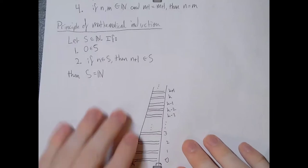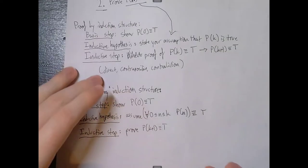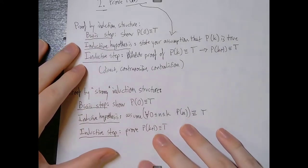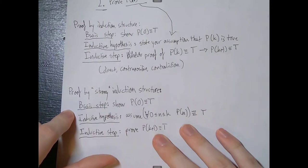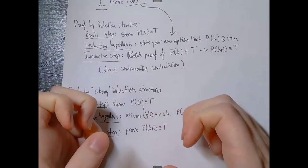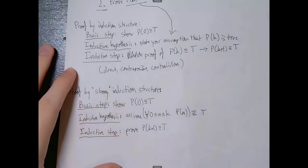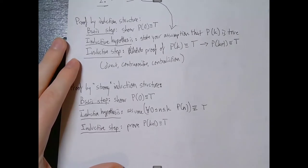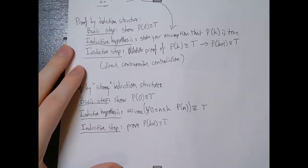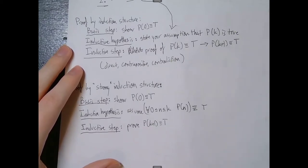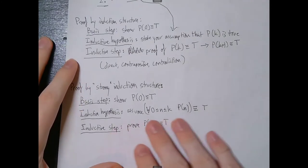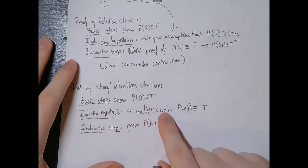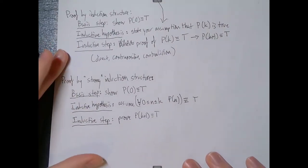All of this is used in something we call strong induction. Here I have the same proof by induction structure from the last video, and below it the proof by strong induction. The reason I put 'strong induction' in quotes is because it really doesn't have that much of a difference from regular induction. We're not doing anything super different — our inductive hypothesis will be a bit different, but we're still using the Peano axioms and the principle of mathematical induction to show that some P(n) is true for all n in the natural numbers.